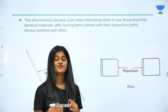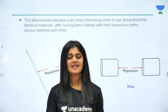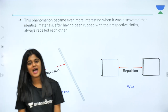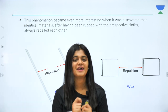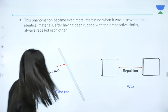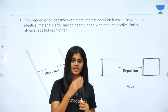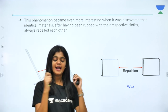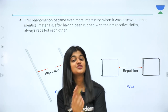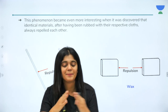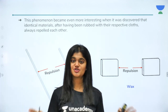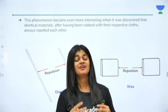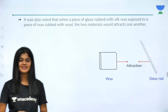This phenomenon was not only about attraction. An interesting thing was observed: if you took identical materials, for example wax and wax, or two wool cloths, or two glass rods, and tried to rub them against each other — here an interesting thing was observed: they repelled each other. They tried to move apart from each other. So not only attractive force, but repulsive force was also seen in these materials.